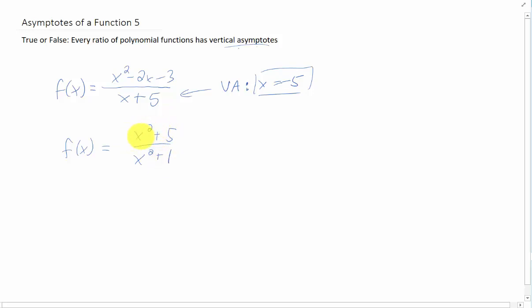I'm just making up numerators here. This x squared plus 5 could be an x or you could make it whatever you want. But this is a ratio of polynomial functions. But you'll notice that the denominator is never zero, at least for real values of x. So we get that there are no vertical asymptotes with this particular function.